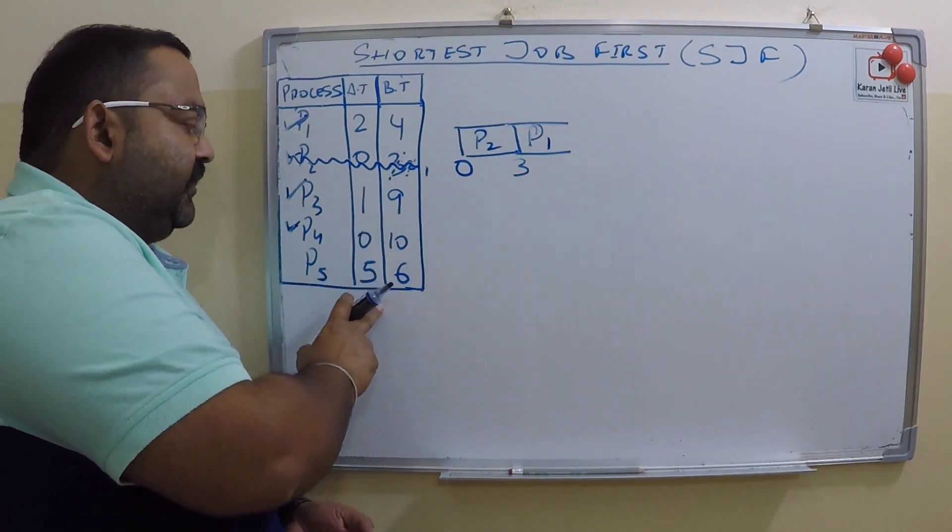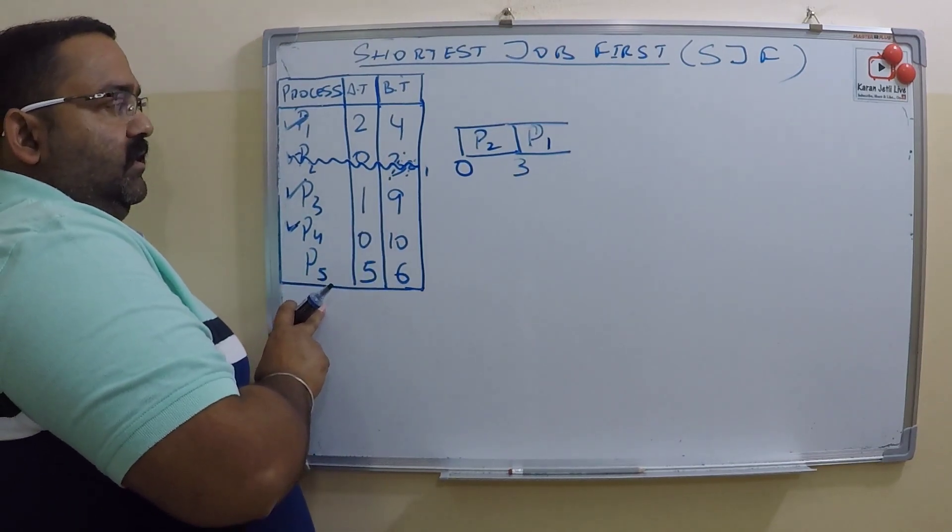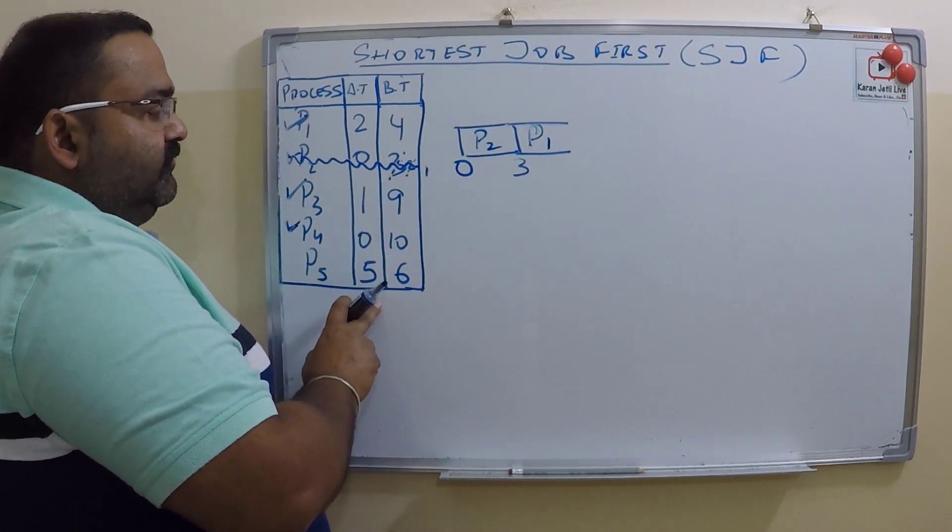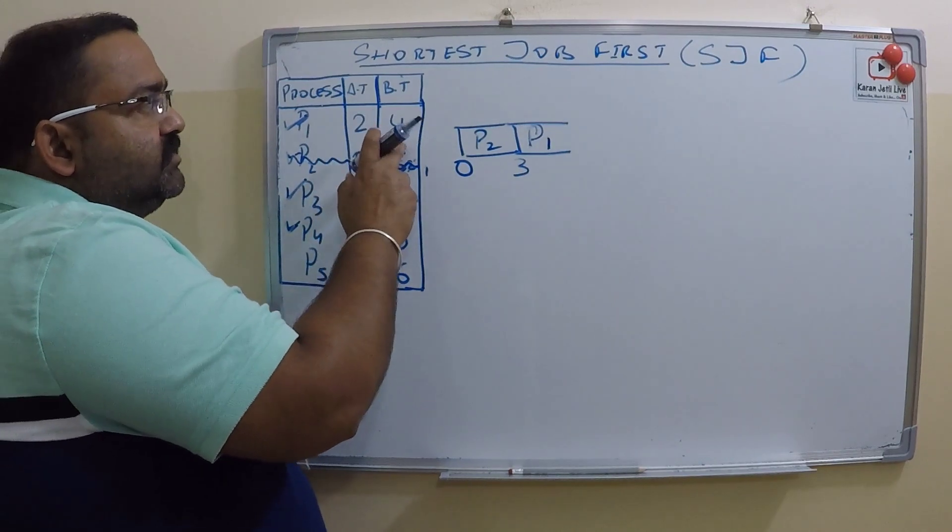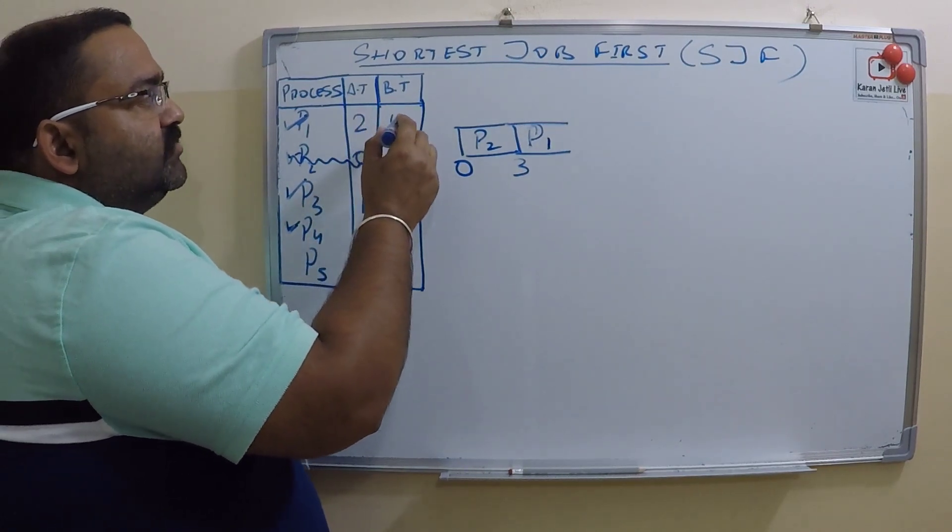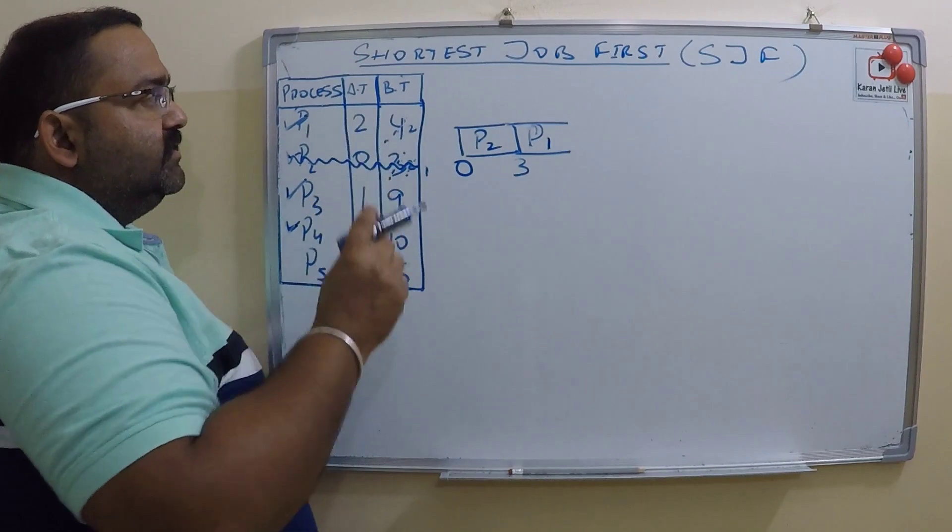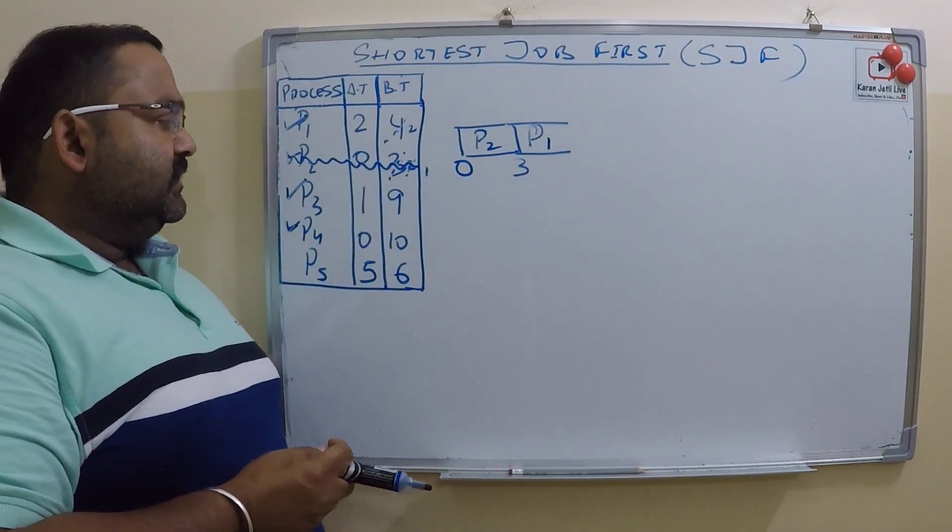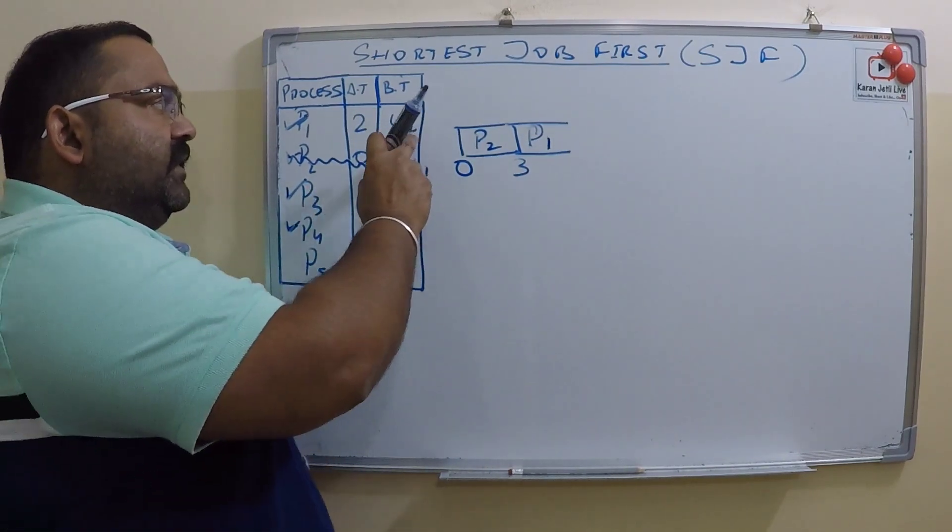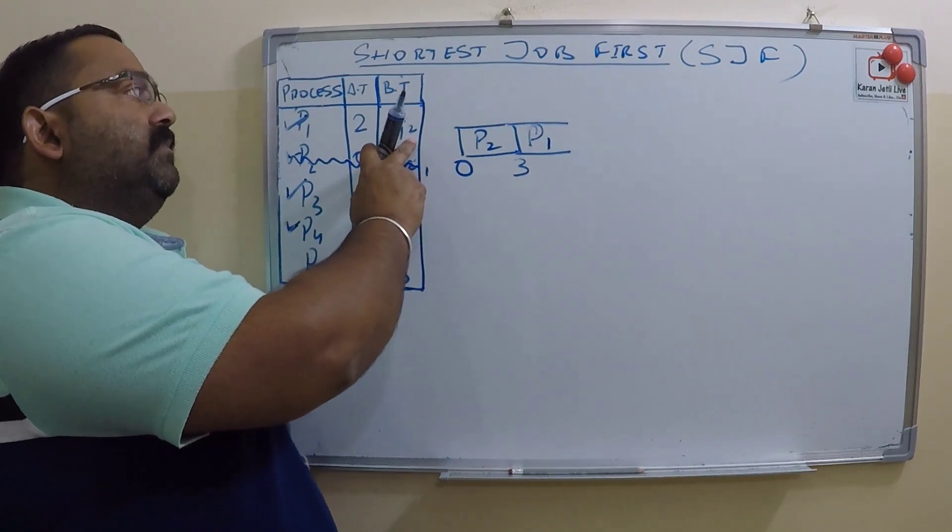At time five P5 comes, but P1 has already finished two seconds of execution. Two seconds is remaining. Then again CPU will compare the remaining burst of P1, that is two, and the present burst of P5, that is six.